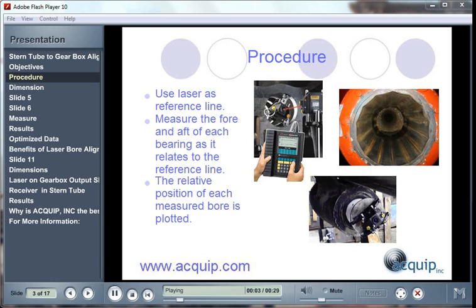The procedure for a laser Stern Tube to Gearbox Alignment is rather simple. You use a laser as a reference line. You measure the fore and the aft of each bearing as it relates to the reference line. It doesn't matter what kind of bearing it is. This can be done in an oil lubricated bearing or in a cutlass bearing. Then, the relative position of each measured bore is plotted.